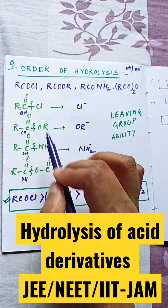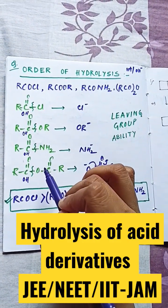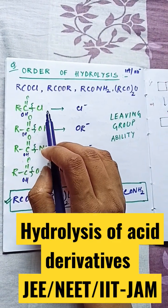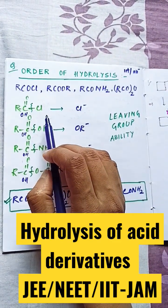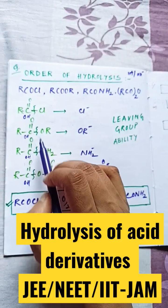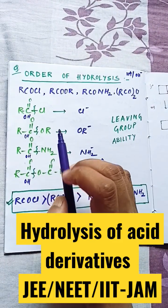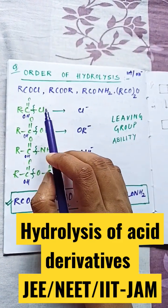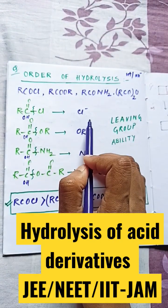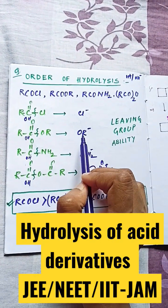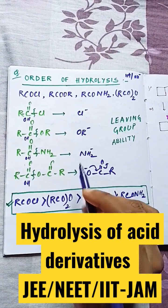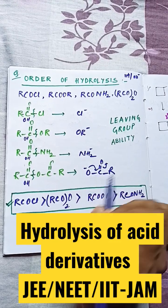These are the four acid derivatives given. When hydrolysis happens, the water attacks this carbon. You have to find the leaving group: here is the chloride (Cl⁻), here is RCO⁻ (anhydride), here is OR⁻ (ester), and here is the NH₂ (amide).